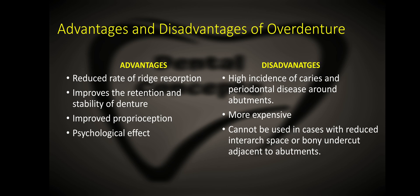What are the advantages and disadvantages of overdenture? Advantages include a reduced rate of ridge resorption, improved retention and stability of the denture, improved proprioception, and psychological benefit to the patient. Disadvantages include a high incidence of caries and periodontal disease around abutments, it is more expensive than a conventional complete denture, and it cannot be used in cases with reduced interarch space or bony undercuts adjacent to abutments.